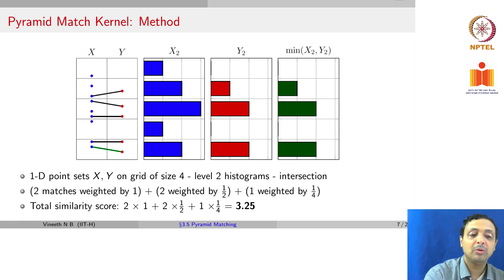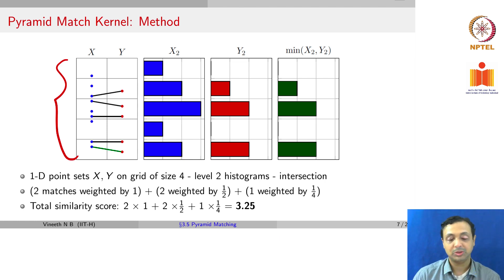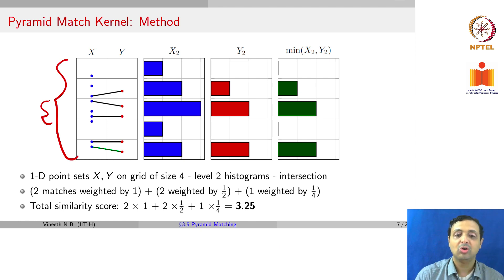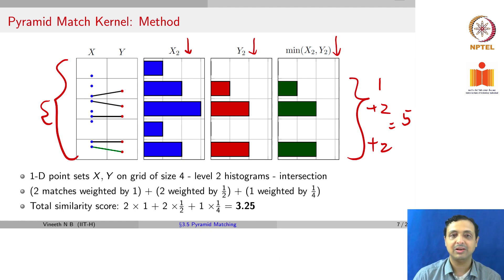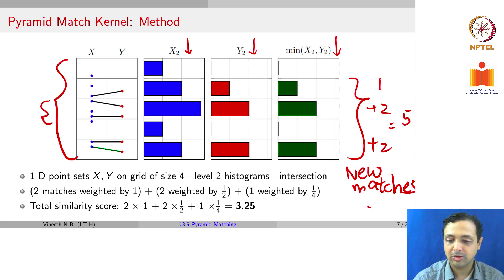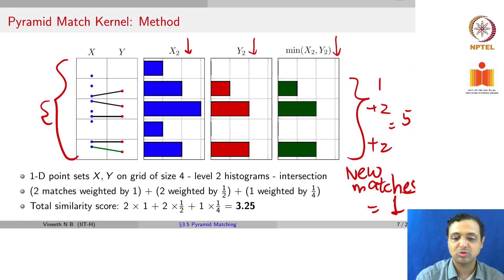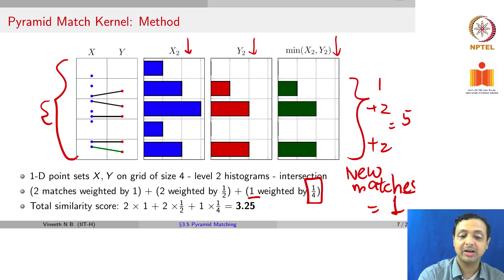Continuing, we make histogram bins just 5 in number, increasing the features per bin. We compute the intersection, now giving 1+2+2 = 5 total matches. Since we already had 4 matches at the previous level, there is 1 new match. This new match is weighted by ¼, because we are at an even coarser level. So the total similarity score becomes 2×1 + 2×½ + 1×¼ = 3.25.